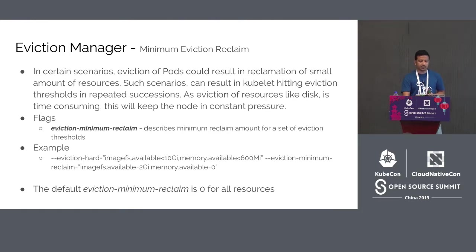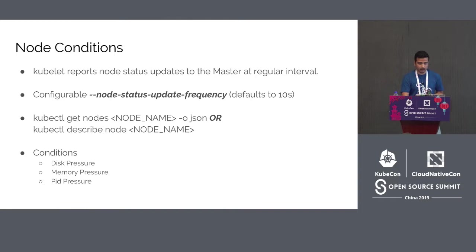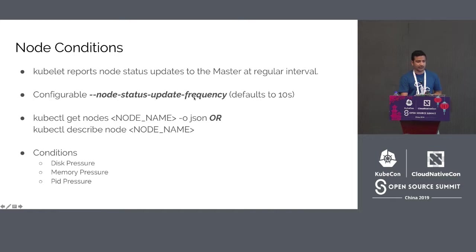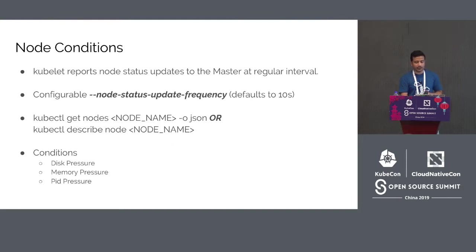When Kubelet reports node status updates to the master, it also reports node pressure conditions. The default interval for these updates is 10 seconds, configurable via the node-status-update-frequency option. One of two commands can be used to check the condition of a node: kubectl get nodes <node-name> -o json or kubectl describe node <node-name>. Kubelet reports various node pressure conditions based on available resources as per configured thresholds, including disk pressure, memory pressure, and PID pressure.